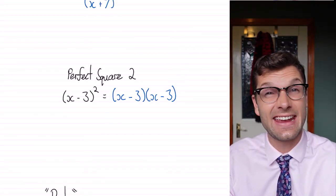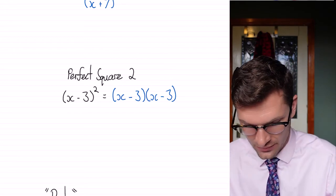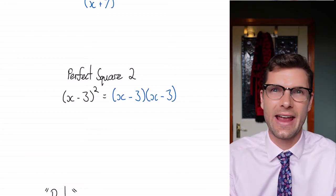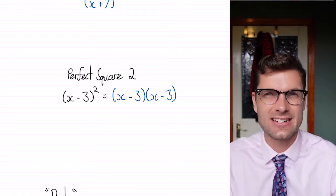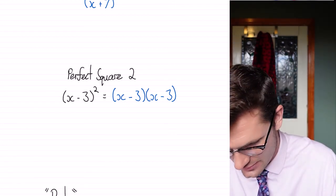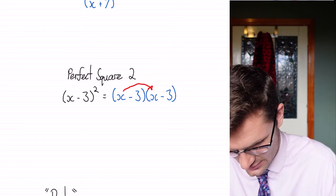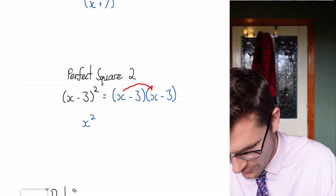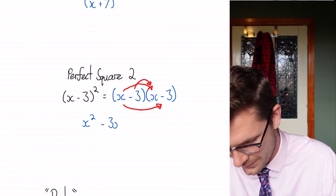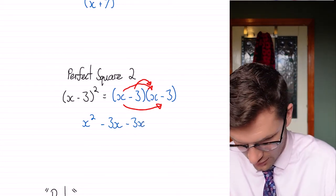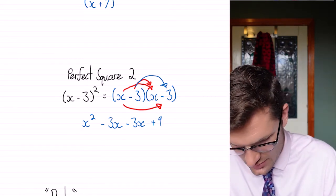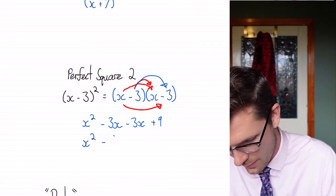So we're just going to see what happens when we've got a negative instead of a positive in our perfect square. So remember that this x minus 3 squared is equal to x minus 3 multiplied by x minus 3. And if we foil this one out, we're going to see a very similar pattern that we did in the previous example. So this one is x multiplied by x is x squared. Then we've got x multiplied by minus 3 and minus 3 multiplied by x. So we're going to have 2 minus 3x's in the middle there. And then finally, minus 3 times minus 3 is equal to positive 9. We collect our like terms and we've got x squared minus 6x plus 9.